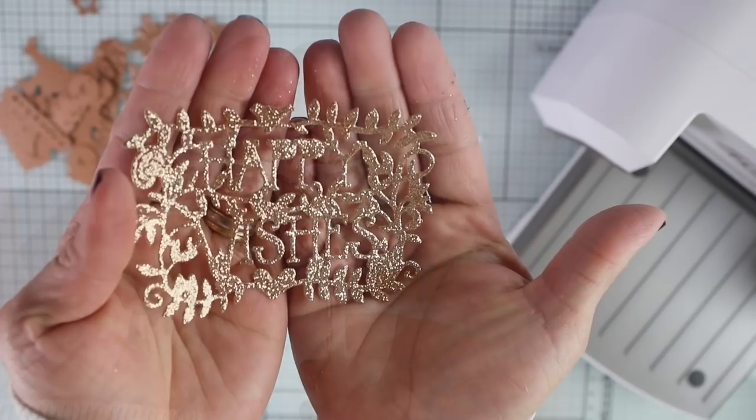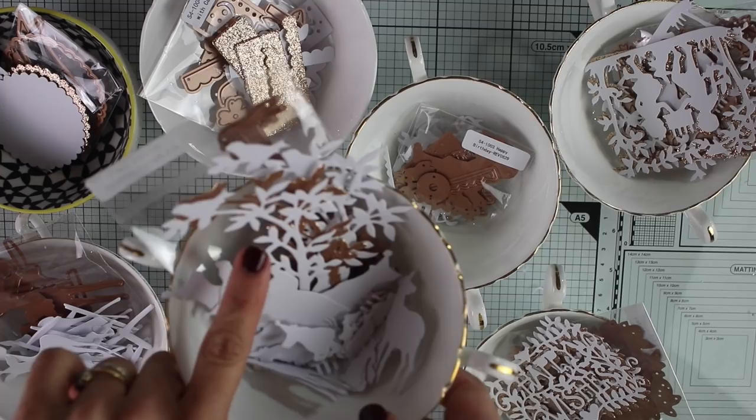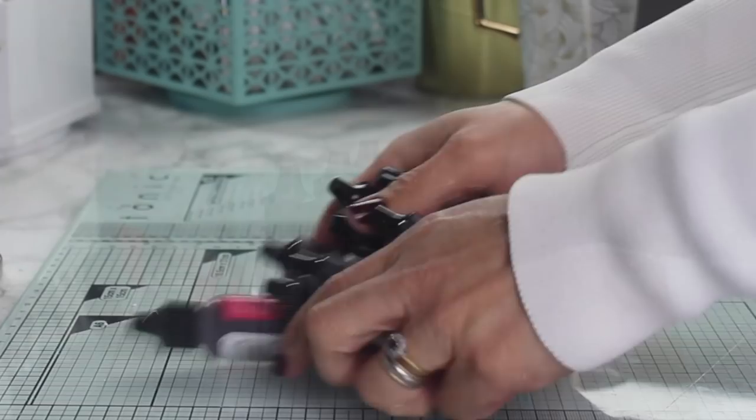So once I finished die-cutting all these shapes and silhouettes I placed them in bowls as you can see there together with the die set to be able to identify them. There are too many die-cuts on my table today and for today I have this idea to make super duper easy alcohol ink backgrounds.